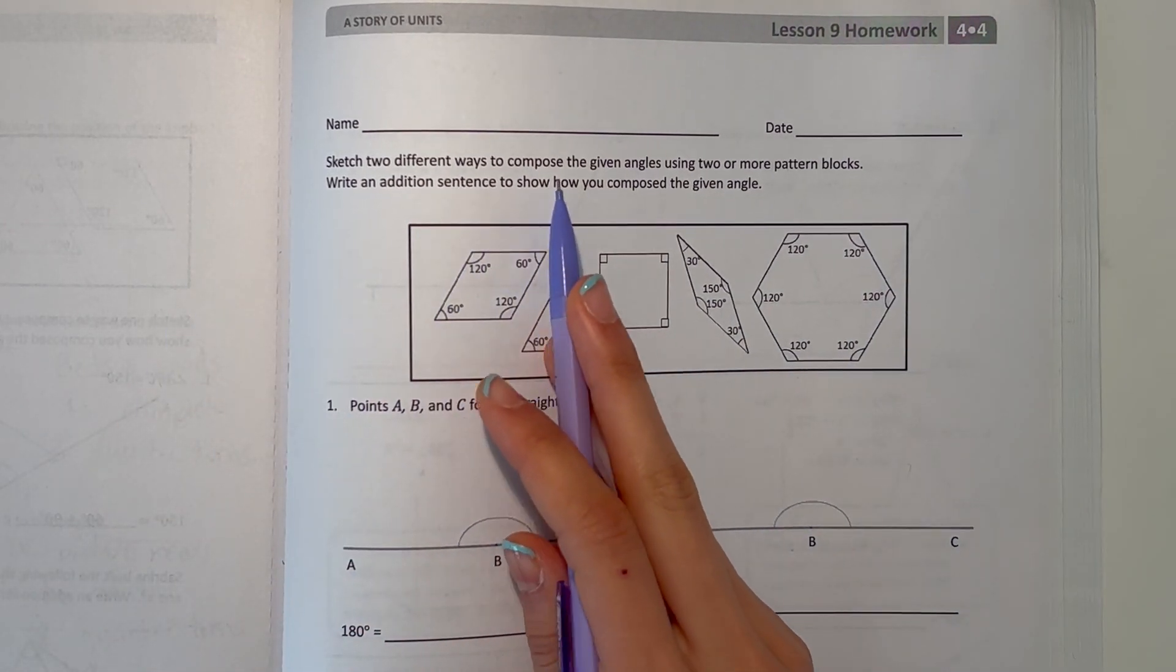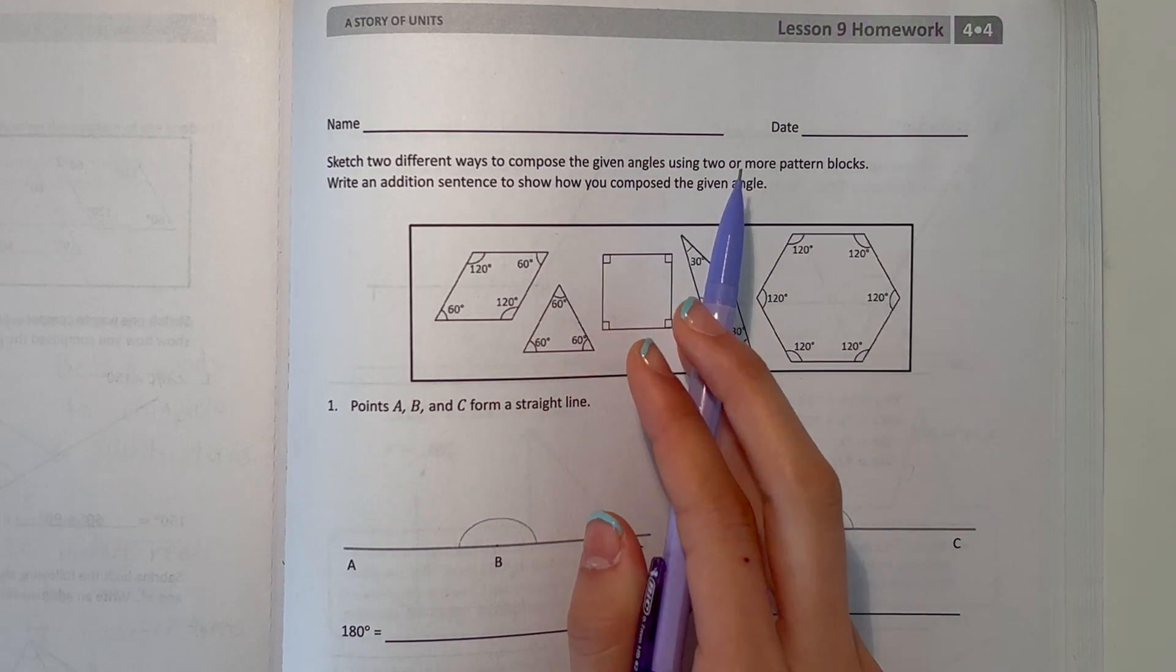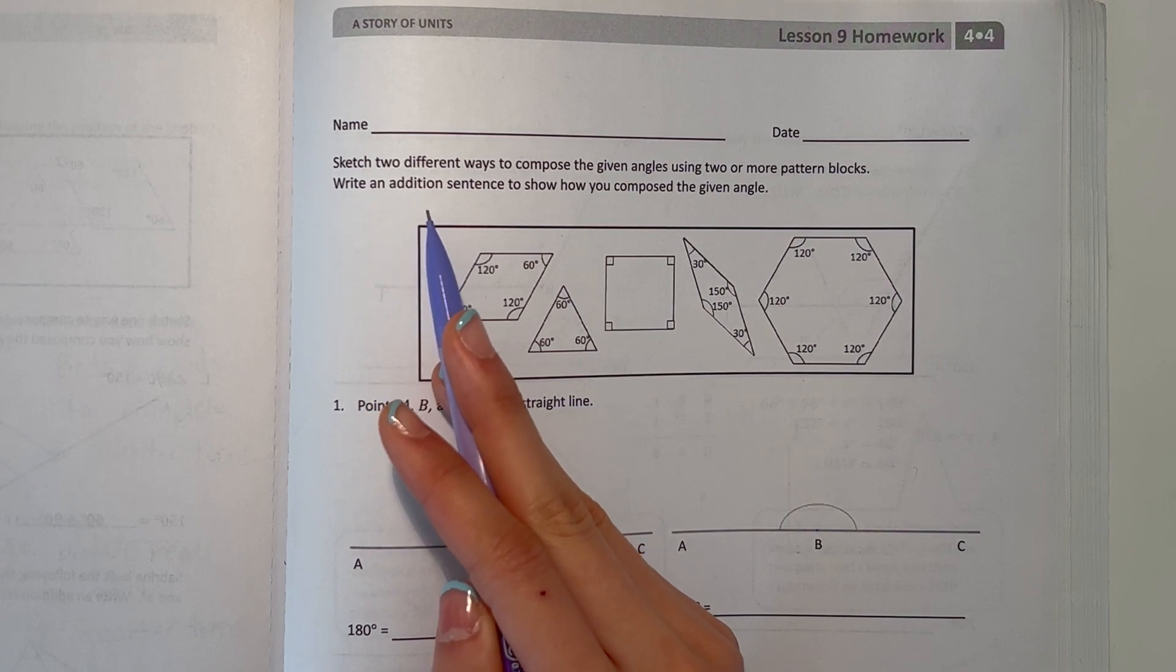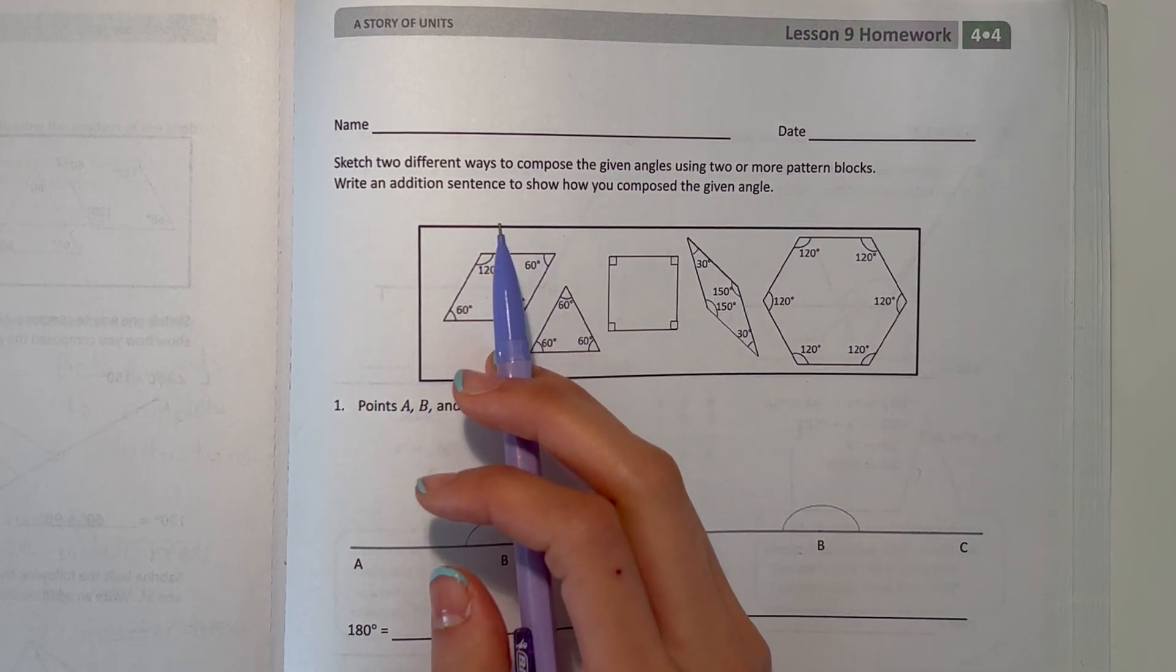Sketch two different ways to compose the given angle using two or more pattern blocks. Write an addition sentence to show how you compose the given angle.